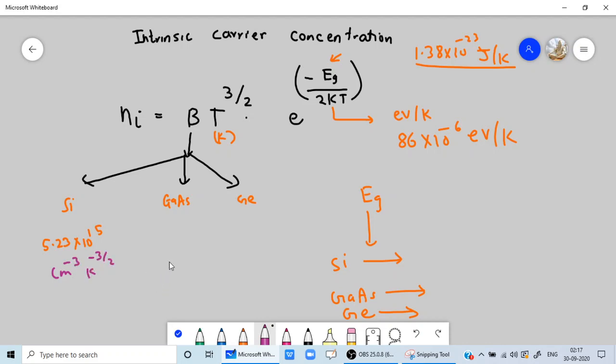The same unit for here also. For gallium arsenide that is 2.10 into 10 to the 14. For germanium we have 1.6 into 10 to the 15.